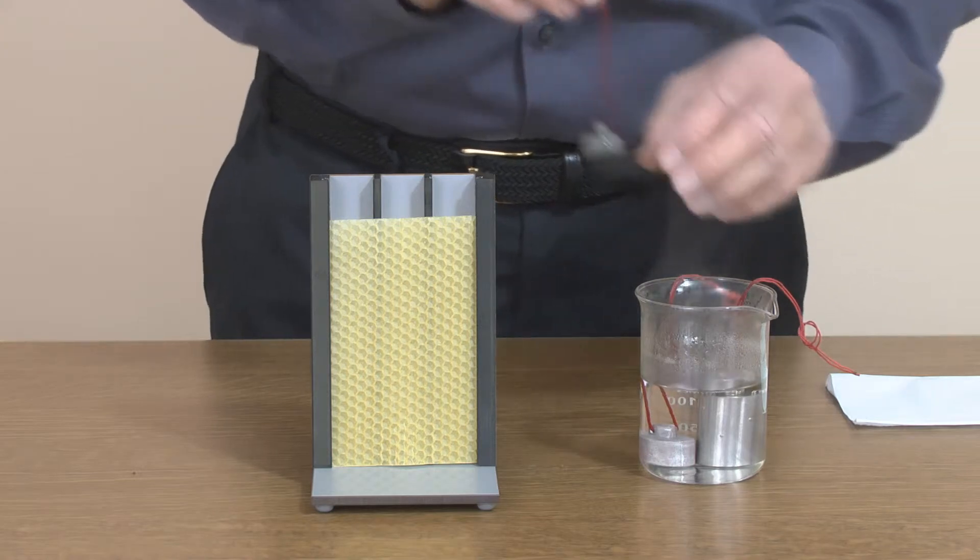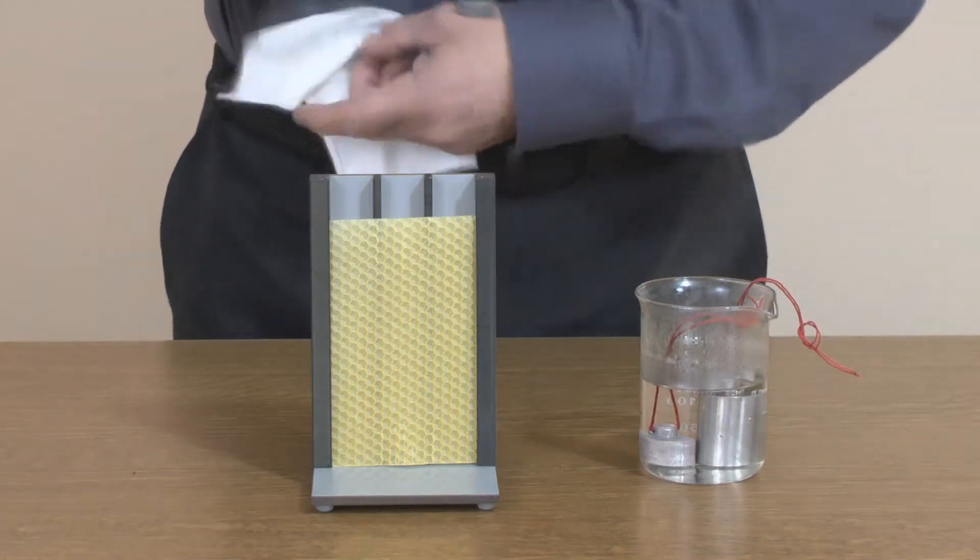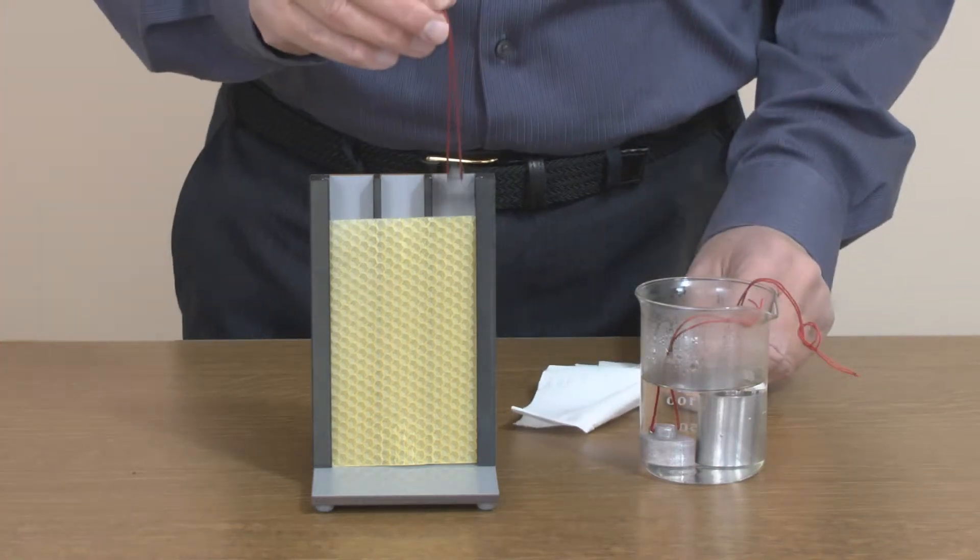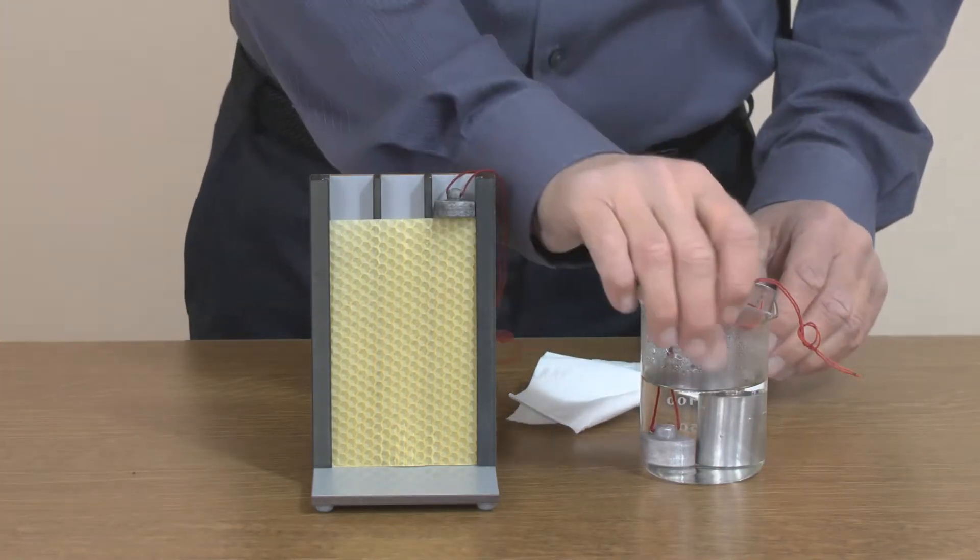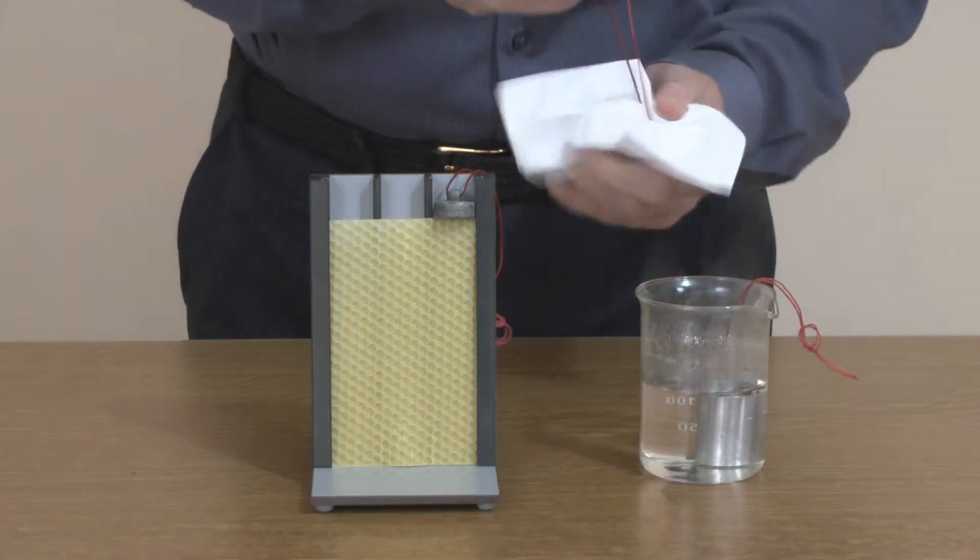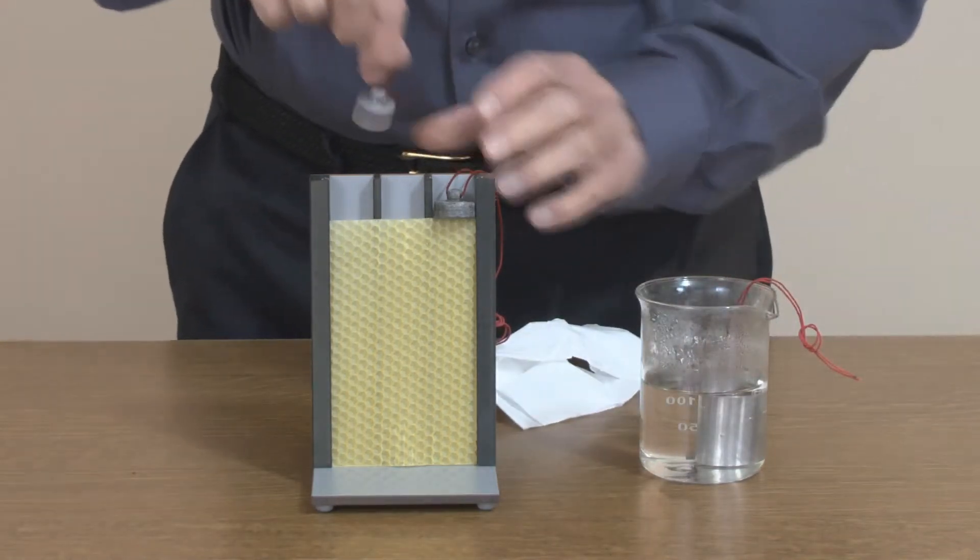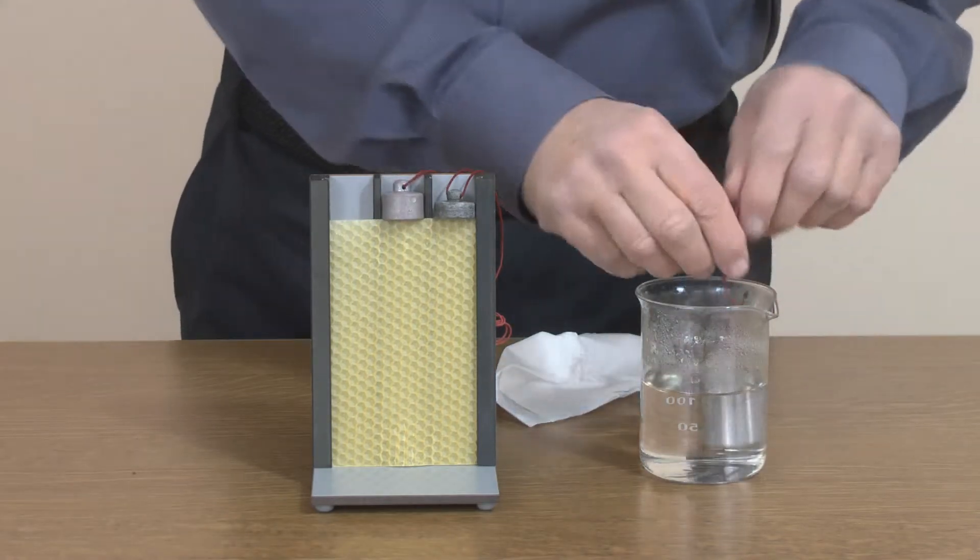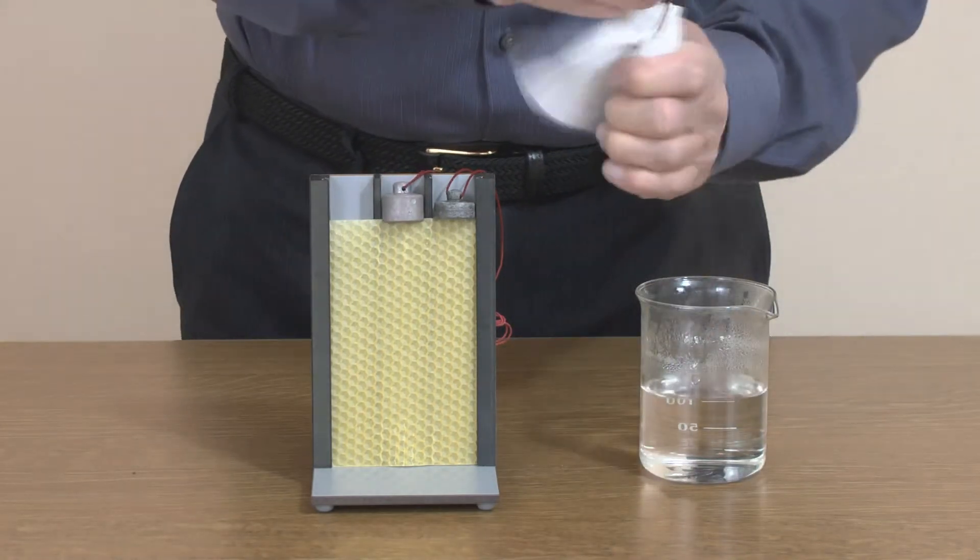So let's take the bismuth first, give it a wipe. Next, zinc. And finally, the aluminum.